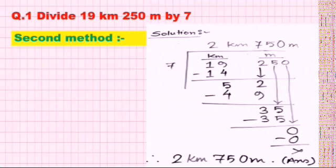If we divide 19 by 7, we get 7×2=14. We cannot take 7×3=21 as 21 exceeds 19. So we take 7×2=14. After subtraction we get 5. The kilometers part is now over. The quotient digit here is 2, which will be in km. In the answer, 2 will be km — when the kilometer portion is complete, that part of the quotient will be in km.